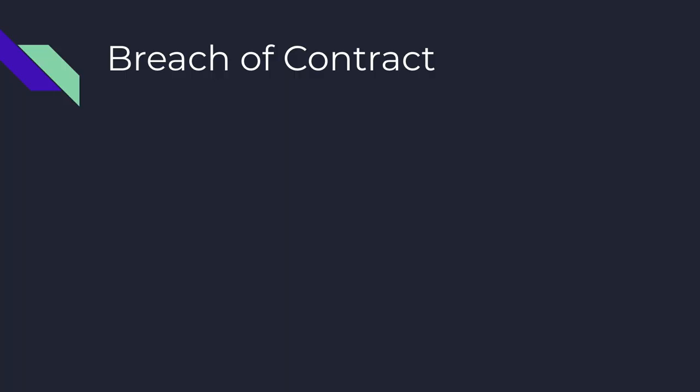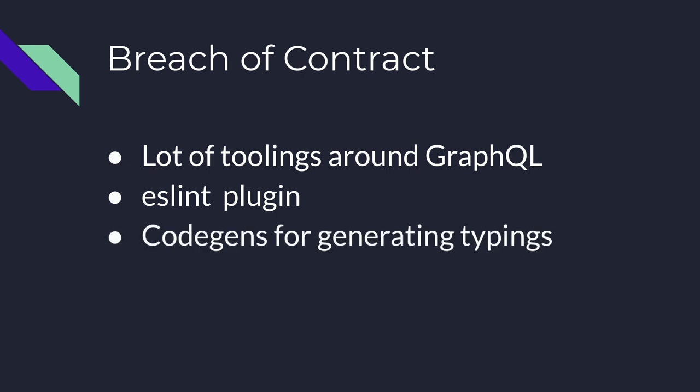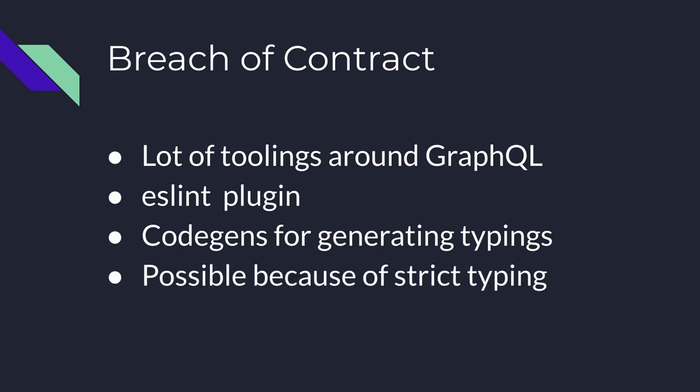Where there's no documentation, there would be a breach of contract. And even with documentation, there's no way to check whether you're querying the correct fields in REST — whether a field is available at the back-end or not; there may be typos. GraphQL is strictly typed, and there's lots of tooling available. There's an ESLint plugin that runs at build time to ensure you're not querying anything that's not available at the server. There are also code generators available for generating typings if you're using TypeScript and Flow — all possible because of strict typing.